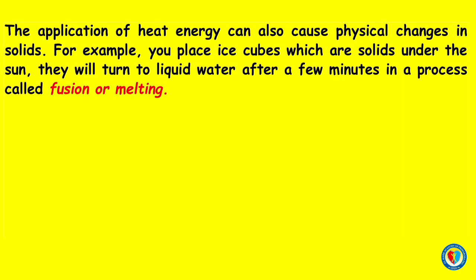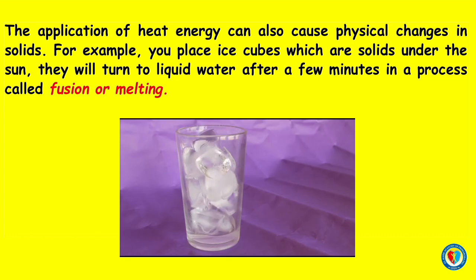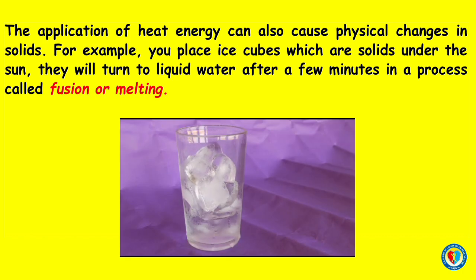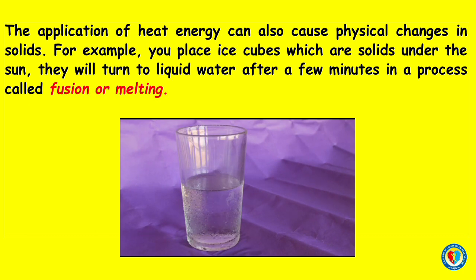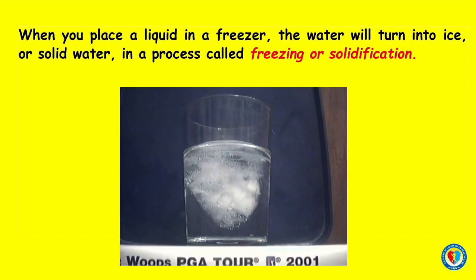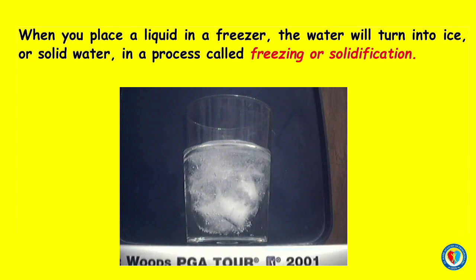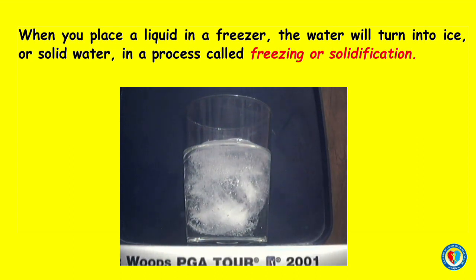The application of heat energy can also cause physical changes in solids. For example, if you place ice cubes, which are solids, under the heat of the sun, they will turn to liquid water after a few minutes in a process called fusion or melting. When you place the liquid water in a freezer, the water will turn into ice or solid water in a process called freezing or solidification.